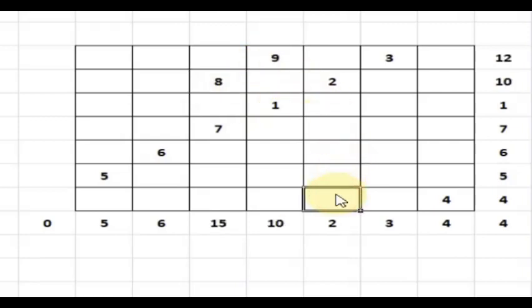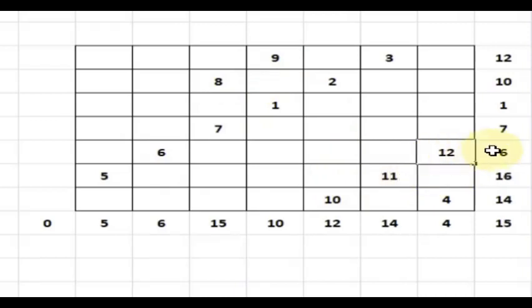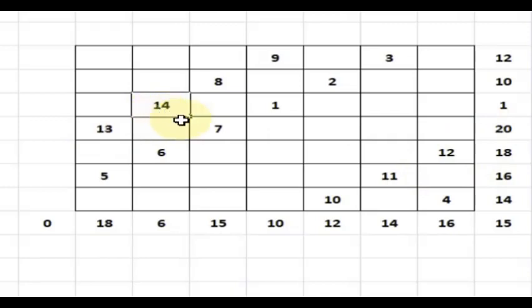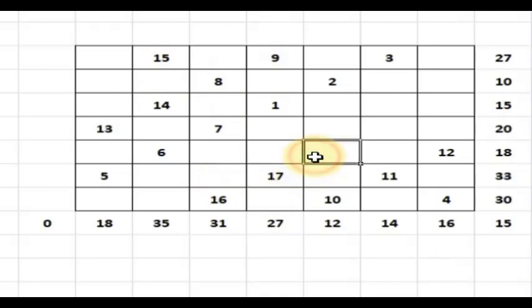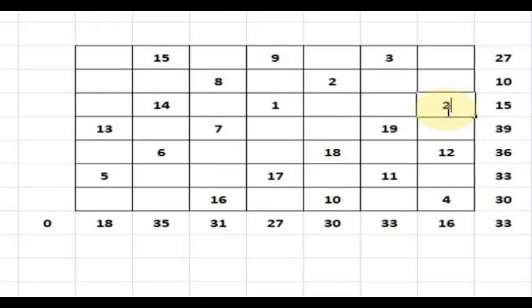Nine — come here — ten, eleven, twelve. From after twelve you cannot go this way, so come here — thirteen. Then fourteen. After fourteen, you don't have any place to go that way — go two steps higher. Then fifteen. You cannot go that way — come down here. Sixteen, seventeen, eighteen, nineteen, twenty. Then twenty-one.